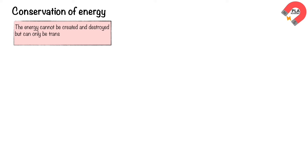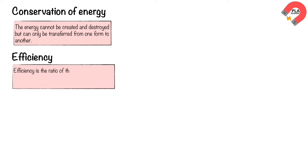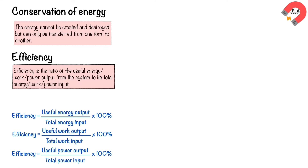Conservation of energy: the principle states that energy cannot be created or destroyed, but can only be transferred from one form to another. Efficiency is defined as the ratio of the useful energy, work, or power output from the system to its total energy, work, or power input. Efficiency can be expressed as a decimal, fraction, or percentage.